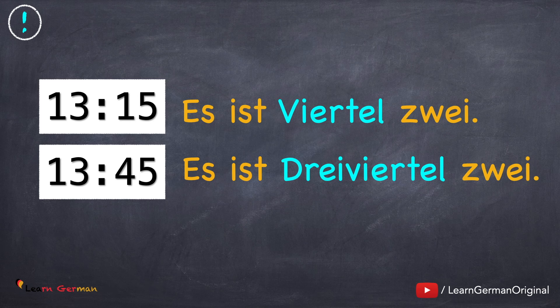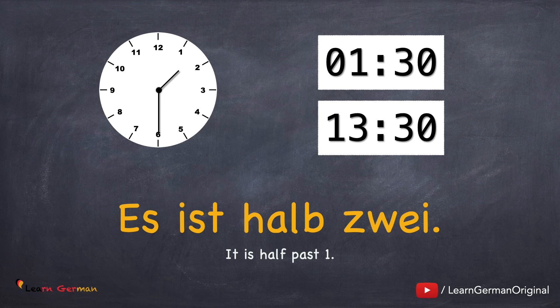Let's now move on and look at some other possibilities of reading or telling time, which you will more commonly hear. Es ist halb zwei. This is a special case and it's not like English. In German, you say halb with the next hour. In English, it's half past one, which means 30 minutes past one. Whereas in German, it's basically half an hour to two o'clock. So you say Es ist halb zwei. These expressions are not the same as in English, so you just learn them as they are.